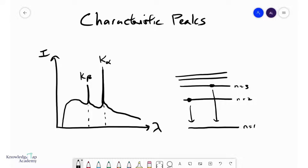So how exactly do these peaks form? To understand this, let us look at the energy level diagram of the bombarded metal. What happens at the start, let me remove these first.